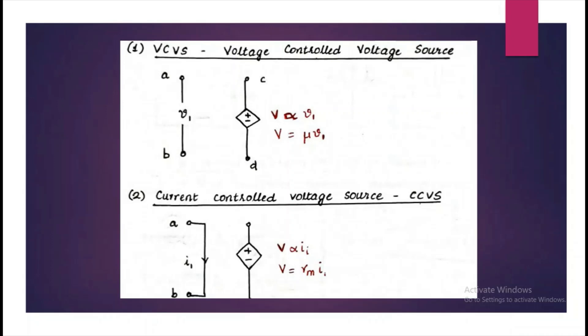Similarly, we have a current controlled voltage source, CCVS, which affects this voltage source. Output voltage V is directly proportional to I1 and equated using a constant resistance RM.